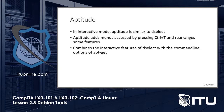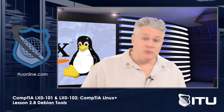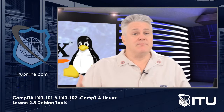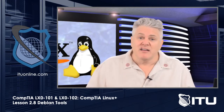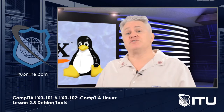Aptitude is a layer that sits over Deselect. It is an interactive mode, kind of like Deselect — another choice we have. It combines the interactive features of Deselect with the command line options of apt-get, and some people really like it. I'm nonplussed about it. You have to make the choices for yourself.